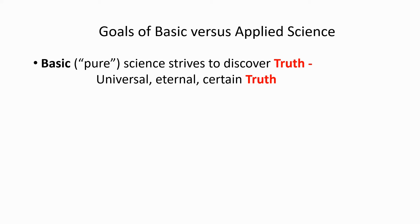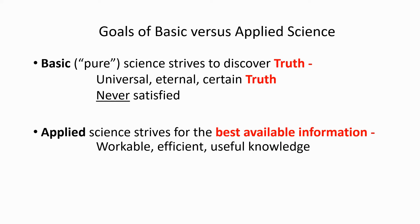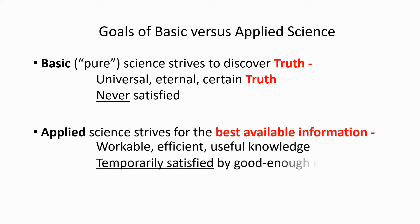Basic science seeks universal, eternal, certain truth — the ideal that we can never quite reach and is never satisfied. Applied science, on the other hand, strives for the best available information: workable, efficient, useful knowledge, and it is temporarily satisfied by good enough explanations.